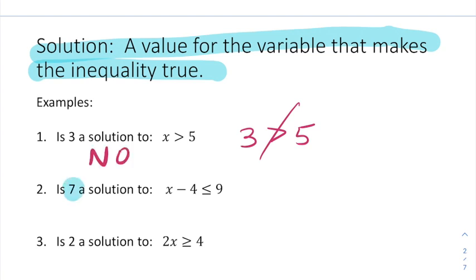Next, is 7 a solution to x minus 4 is less than or equal to 9? So I'll plug 7 in. Now finally, we're looking at the question, is 3 less than or equal to 9? And 3 is less than 9, so this is true. So yes, 7 is a solution.